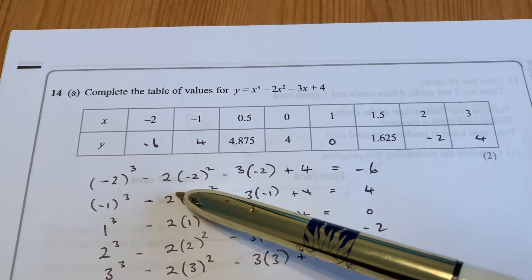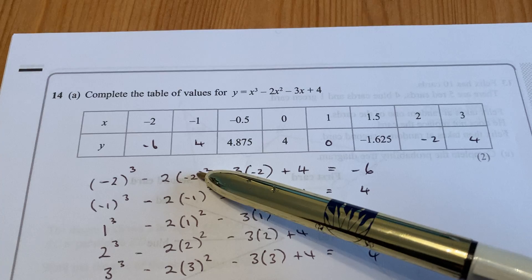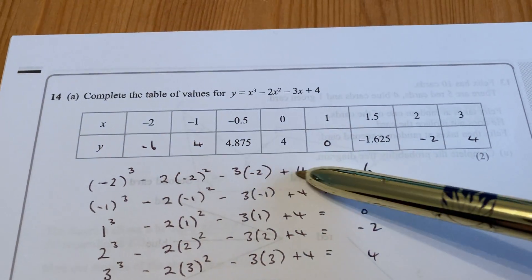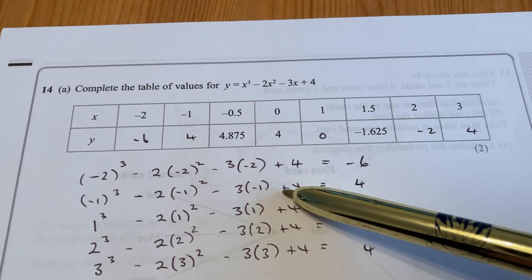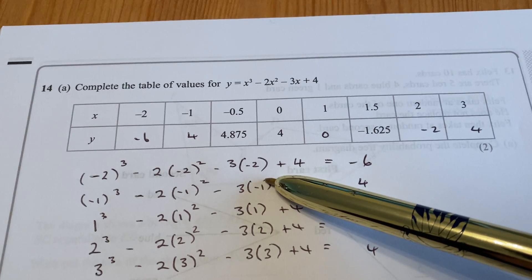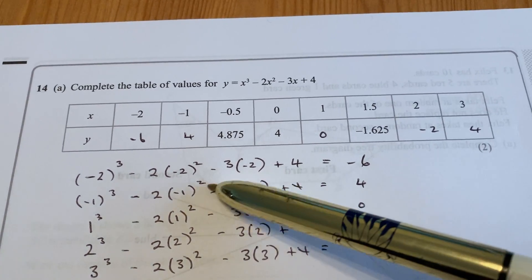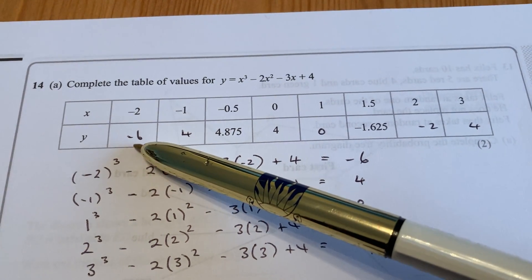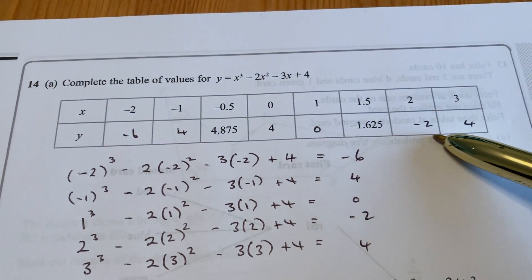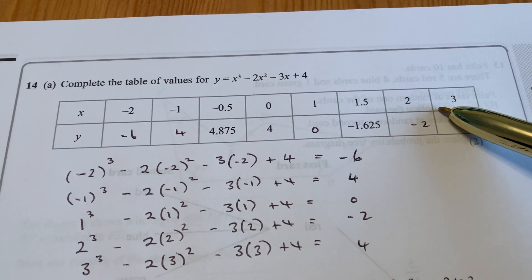Make sure whenever you type a negative number in your calculator, you put it in brackets, otherwise you'll get your signs wrong and end up with the wrong number. Do exactly the same for the other values. The y-coordinates are -6, 4, 0, -2, and 4 for those particular x values.